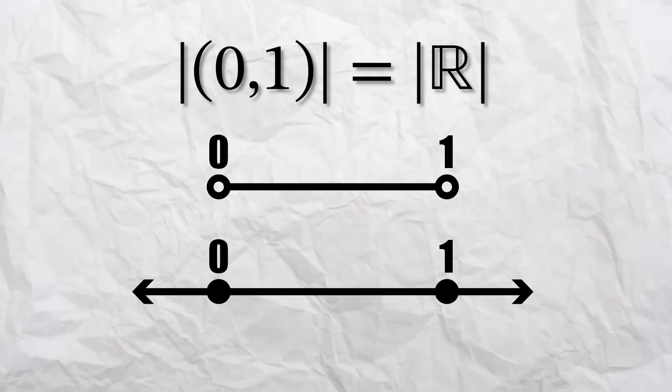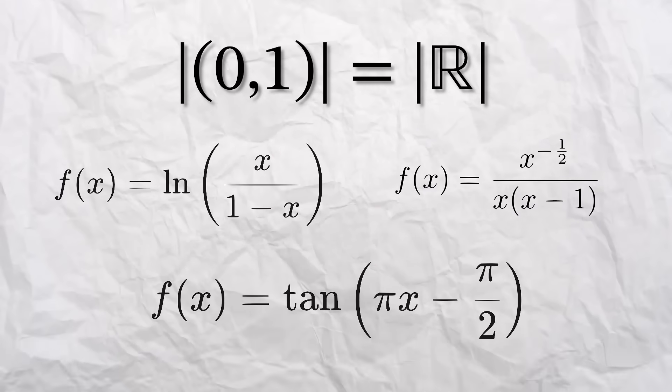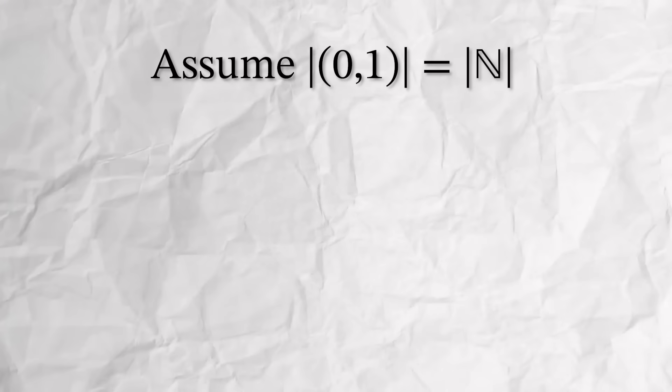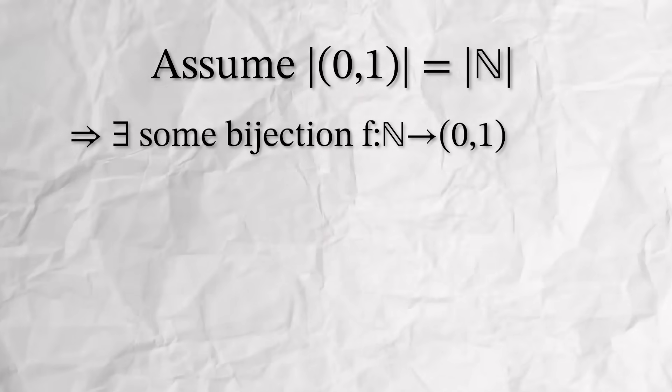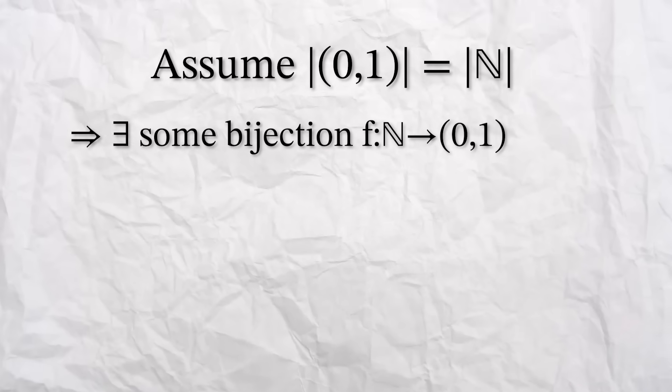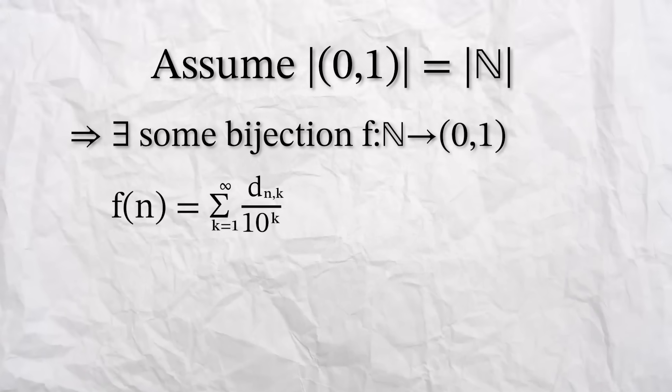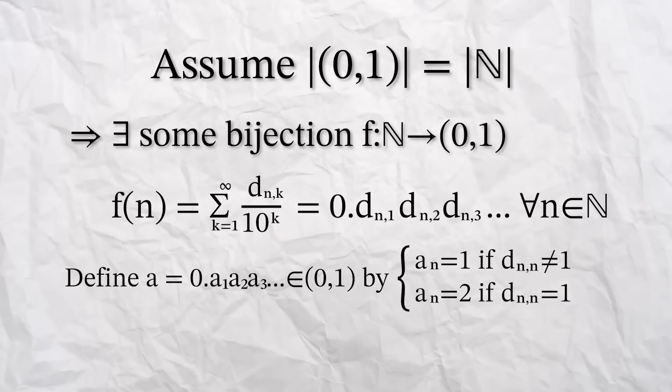So let me break it down. We first note that there exists a bijection between the interval 0, 1 and the real numbers. There are many explicit functions we can use, but all we need is 1. Now we assume that the cardinality of this interval is the same as the natural numbers. We'll aim to prove this wrong by the end. If this is the case, then there must exist some bijection, F, from the natural numbers to the real interval 0, 1, which would take the form of this sum. This is just some decimal expansion, which lies between 0 and 1.